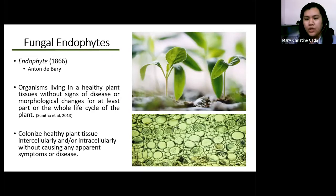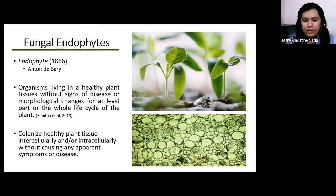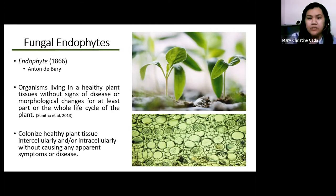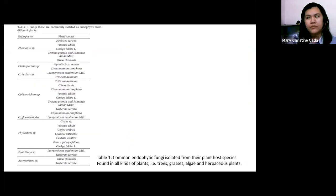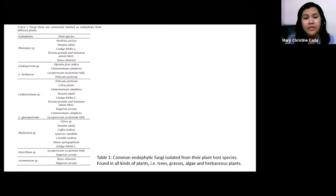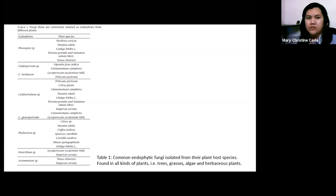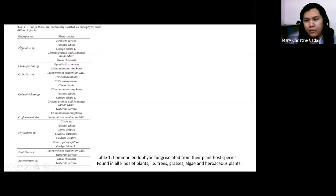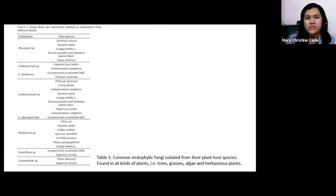This type of microorganism — fungal endophytes — is commonly associated with almost all plants being studied nowadays. They exhibit complex interactions with their plant hosts, involving mutualism as well as antagonism. Endophytic fungi can be isolated from different plant species, including both non-vascular and vascular plants. For example, Phomopsis is commonly isolated from different plant species.